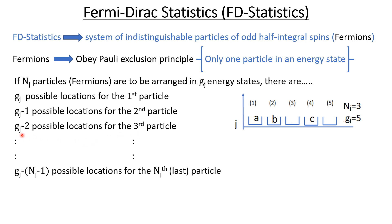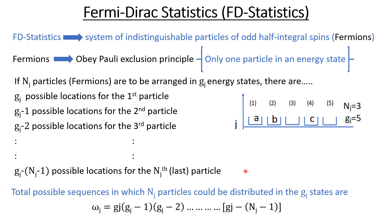You see: when you have the third particle you have gj minus two; when you have the second particle you have gj minus one; and for the first particle it is gj minus zero. So when you have the nth particle you must subtract n minus one. So all the possible sequences in which we can arrange nj particles among the gj energy states is the product of these terms.